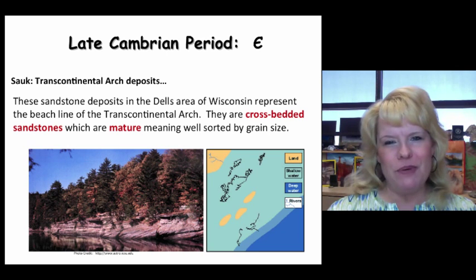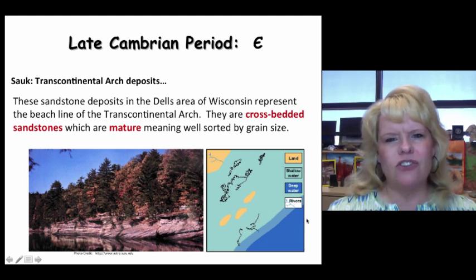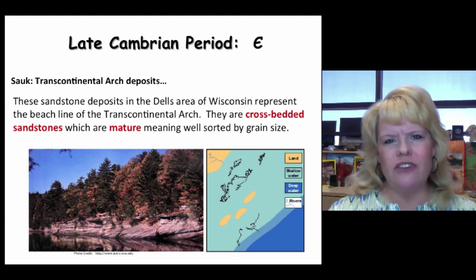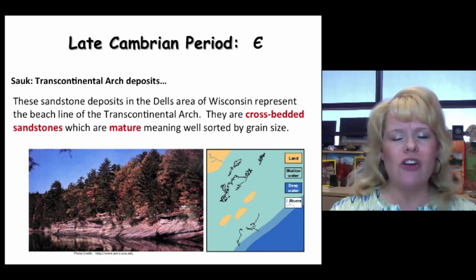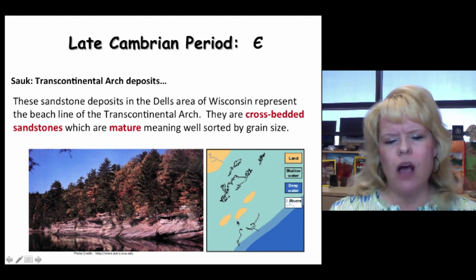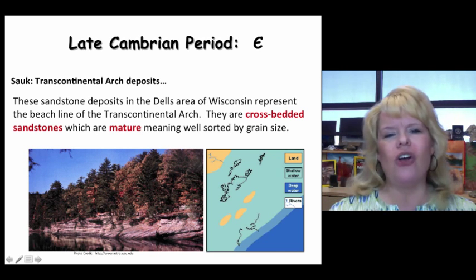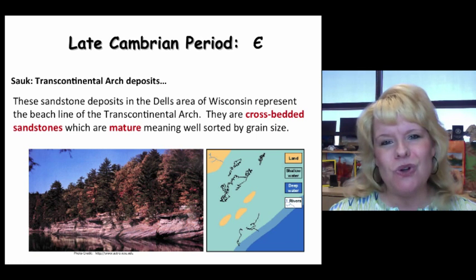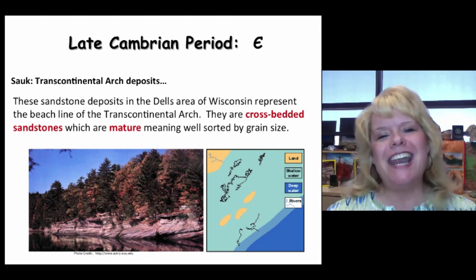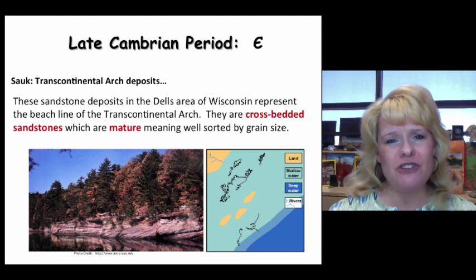Moving into the late Cambrian, we start with some famous rock deposits. Along the transcontinental arch — islands just south of the Canadian Shield stretching down to New Mexico — there are sandstone units famous near the Great Lakes, called the Dells area of Wisconsin. These are mature sandstones representing beach deposits, very well cross-bedded. Mature sandstones represent clean quartz grains of the same size, washed by beach surf and deposited with pretty pure content, cemented by calcite.